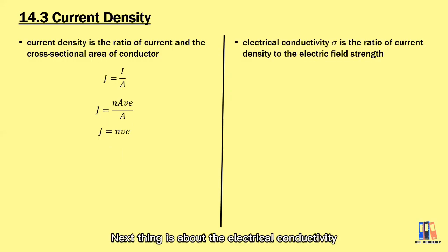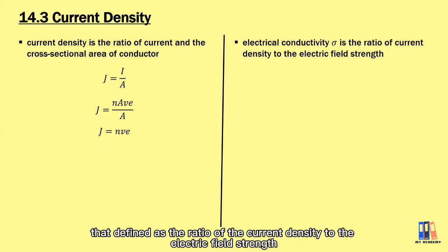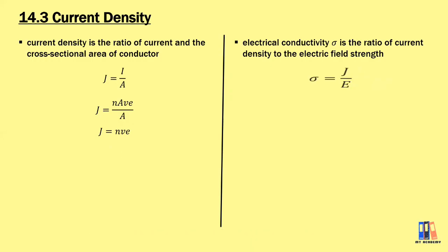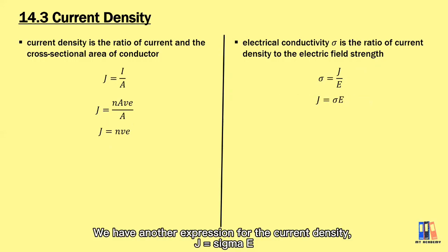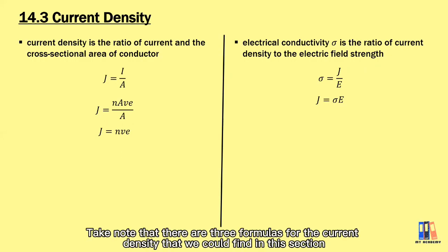Next is about the electrical conductivity, defined as the ratio of the current density to the electric field strength, where sigma is equal to J over E. So we have another expression for the current density: J equal to sigma E. Take note that there are three formulas for the current density that we can find in this section.